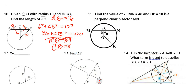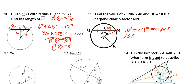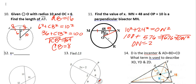Number 11: find x. MN = 48 and OP = 10, and OP is a perpendicular bisector of MN. That cuts MN in half, so PN = 24. We draw radius ON. Using the Pythagorean theorem: 10² + 24² = ON². That's 100 + 576 = 676. Taking the square root, ON = 26, which equals x.